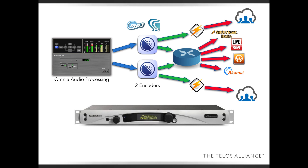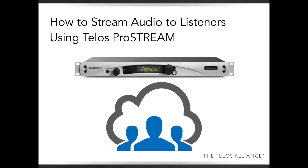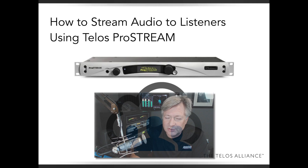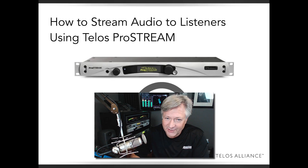If you want to get started in a small way, there are plenty of shoutcast servers available for a very low monthly fee, and a few are even free for a small number of listeners — we'll show you how to do that exactly in another episode. This is how you get from audio going into your ProStream, through the audio processing, two different encoders, and either streaming directly to listeners or through a content distribution network. I hope you enjoyed that — be sure to tune into this channel for other helpful tips on Telos products. Thanks.